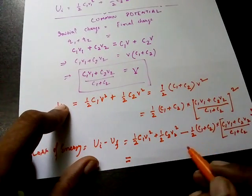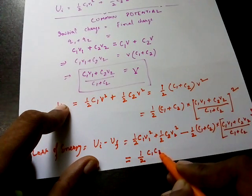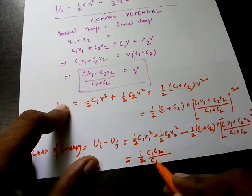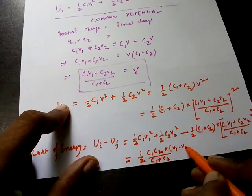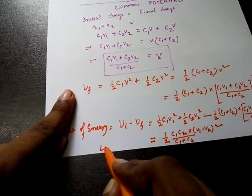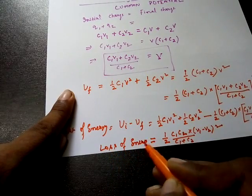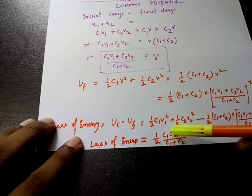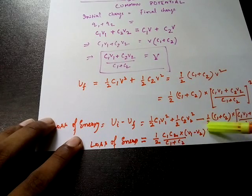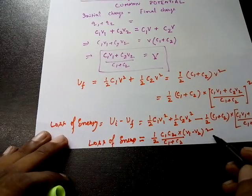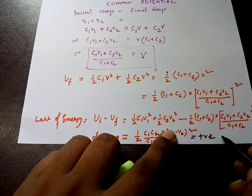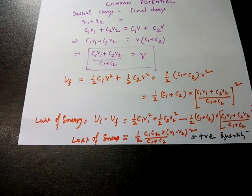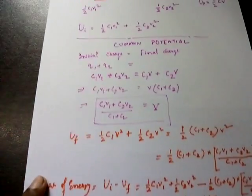On simplification, the loss of energy equals ½ · [C1·C2 / (C1 + C2)] · (V1 − V2)². This is the expression for the loss of energy. Here C1 and C2 are constants and are positive, and (V1 − V2)² is a square term which is always positive. Therefore, the loss of energy is always a positive quantity, meaning energy loss will definitely occur whenever there is a sharing of charge.